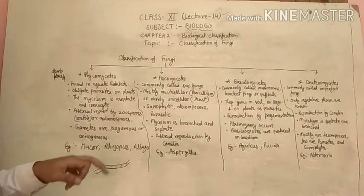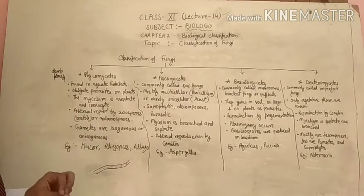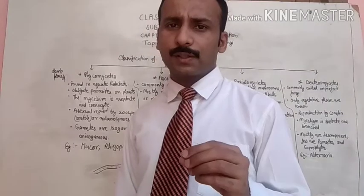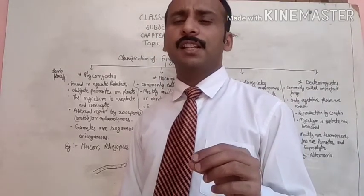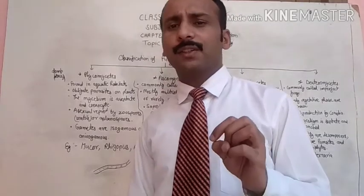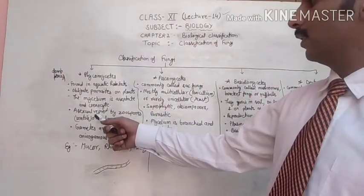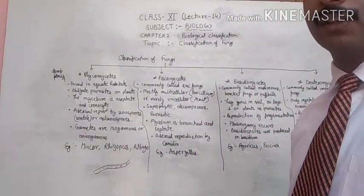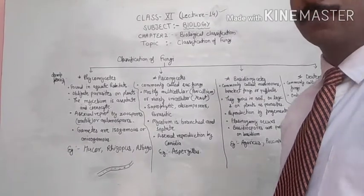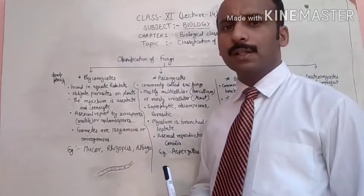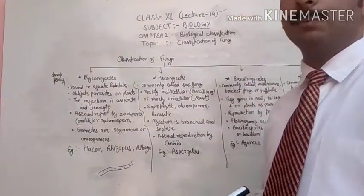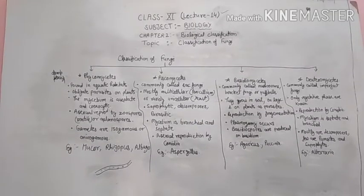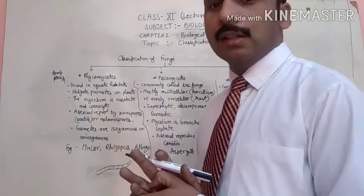Asexual reproduction occurs by zoospores and aplanospores. Fungi always reproduce by spores. Zoospores are motile — they can move from one place to another and have flagella. Aplanospores are another type of spore helpful in reproduction.